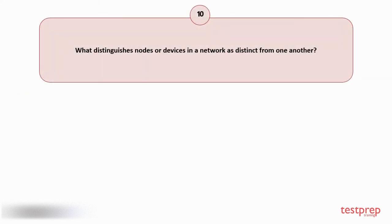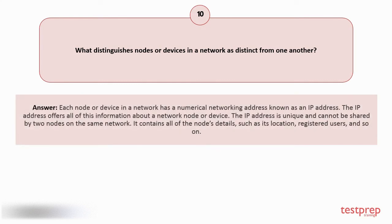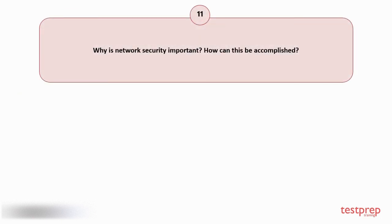Question number ten: What distinguishes nodes or devices in a network as distinct from one another? Your answer is: Each node or device in a network has a numerical networking address known as an IP address. The IP address is unique and cannot be shared by two nodes on the same network. It contains all of the node's details, such as its location, registered users, and so on.